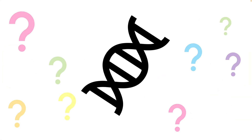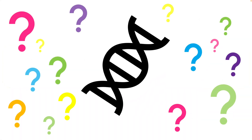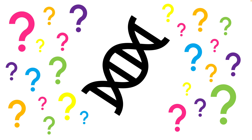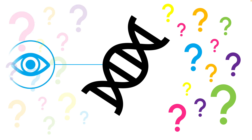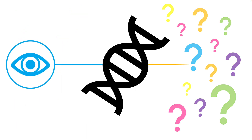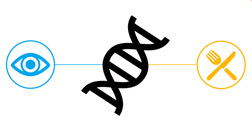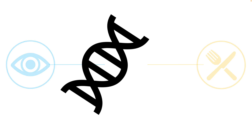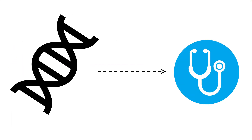Our DNA contains the answers to many questions. It can tell us why our eyes are a certain color, or even why some foods don't taste very good to us. Changes in our DNA can also tell us why certain people develop certain diseases. But how exactly does this work?